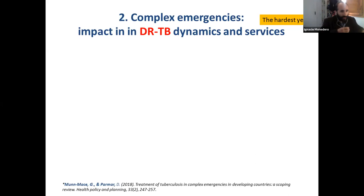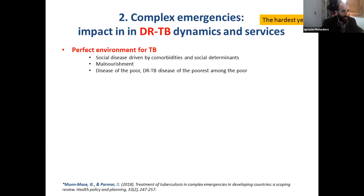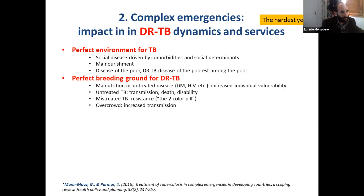Now the hardest test — what about drug-resistant TB? It's like a double edge, because conflicts and complex emergencies are the perfect environment for tuberculosis, as it's a social disease driven by comorbidities and social determinants like malnutrition. TB is a disease of the poor, but when it comes to drug-resistant TB, it's a disease of the poor among the most poor. Conflicts are a perfect breeding ground for drug-resistant TB, because there is much more individual vulnerability like malnutrition and untreated disease.